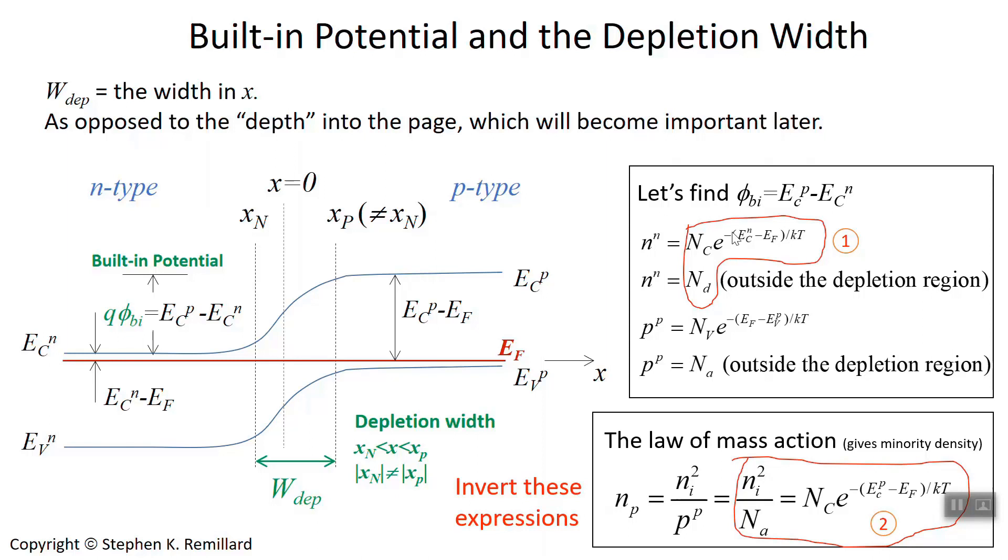Put these two equations together. We will use them. First, invert them—that is, get them into logarithm form. And then let's do a little algebra to get this expression: E sub C on the P side minus E sub C on the N side. So I'm going to rewrite these two equations. I numbered them 1 and 2. I'm just going to write them again.